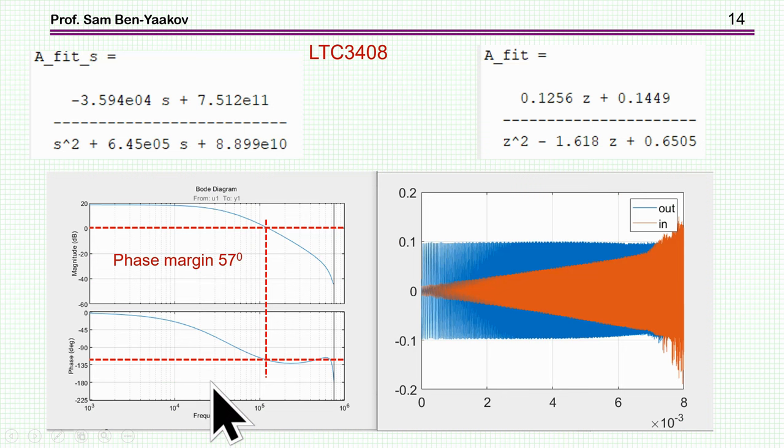So this is one of the units, one of the DC to DC converters, the one with the higher bandwidth. Here is the S domain transfer function. This is the Z domain. And of course, you can now draw the frequency response in the frequency domain. And what we see here is the bandwidth or the zero cross frequency is 100. Well, it is like 125.